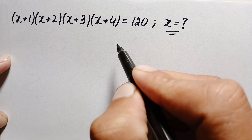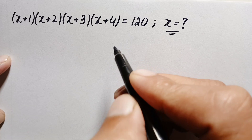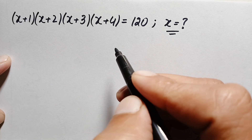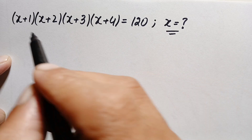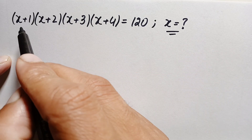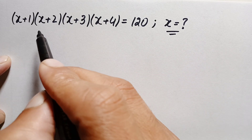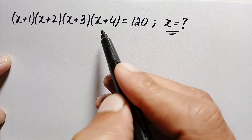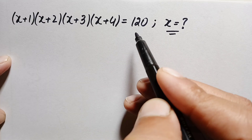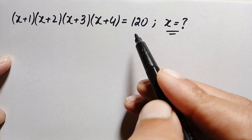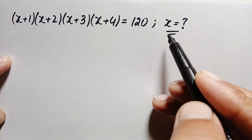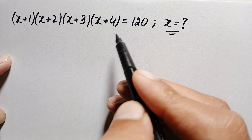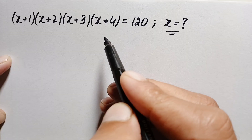Hello everyone, you are welcome. Today we have a very interesting algebra math problem: (x+1)(x+2)(x+3)(x+4) = 120. We will find the value of x and all possible solutions of this algebra math problem.